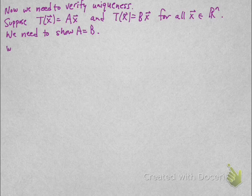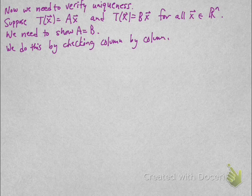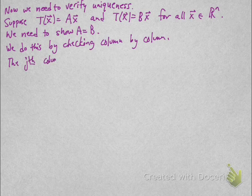We do this by checking column by column. If each column of A equals the corresponding column of B, then the matrices are the same. The jth column of A is A times the vector E_j.